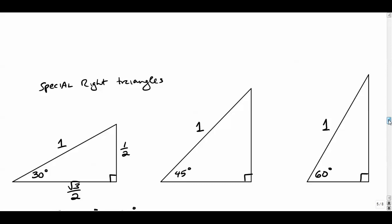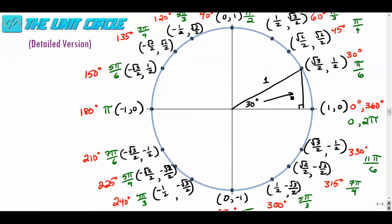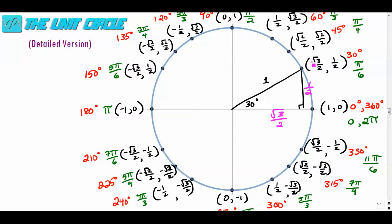Reverting back to the unit circle: across from 30 degrees is 1 half, and across from 60 degrees is radical 3 over 2. This point on the circle has coordinates (x, y), so we go over radical 3 over 2 units and up 1 half units. That's where these coordinate values come from.